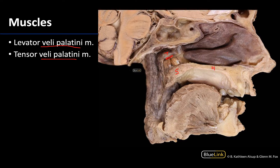The levator veli palatini is the deeper or more medial of the two, but it actually looks superficial in this view, and that makes sense because we're looking onto the more medial portions of the hemisected head. It has proximal attachments on the temporal bone as well as the sphenoid, and there are also attachments to the pharyngotympanic tube. The more distal attachments or insertions are going to be on the soft palate as well as the palatine aponeurosis.